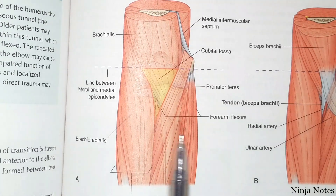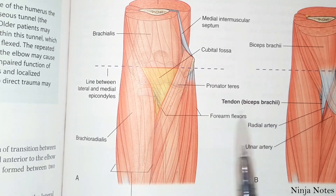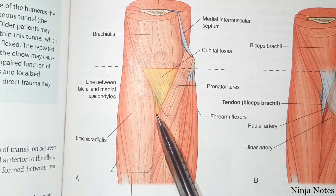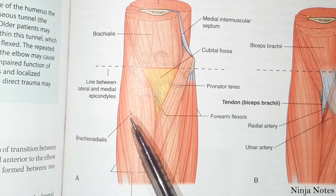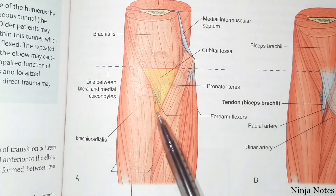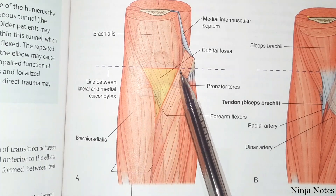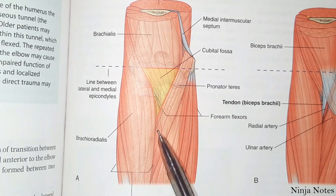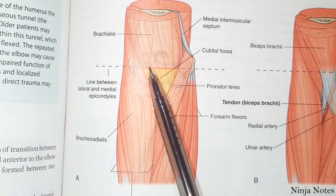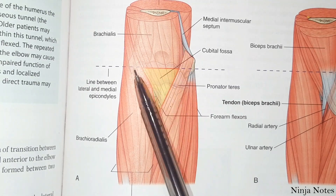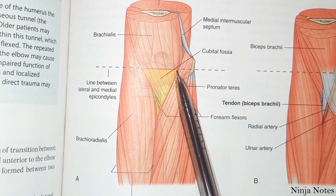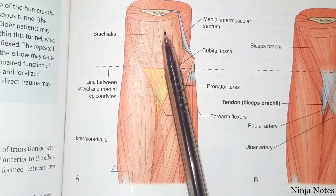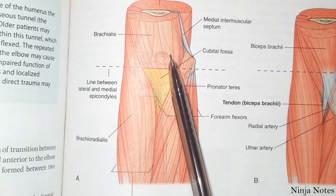This picture is for the borders. This is the lateral border and it is formed by the brachioradialis muscle. This is the medial border and it is formed by the pronator teres muscle. The superior border is formed by the hypothetical line between the lateral epicondyle and the medial epicondyle of the humerus bone.